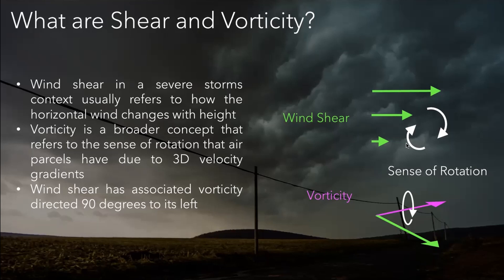We have this diagram over here — you can see the wind shear. You're gonna have sort of an overturning motion there. That's that sense of rotation that you get with the wind shear. There are other things that can produce vorticity as well, as we'll see later on.